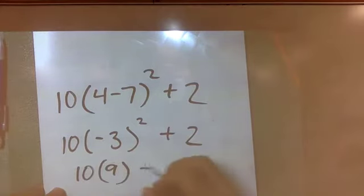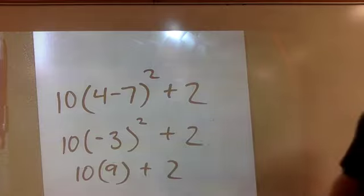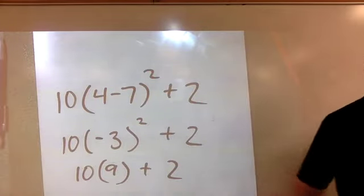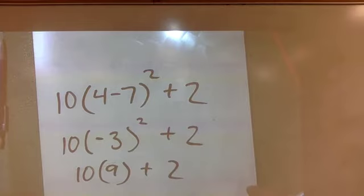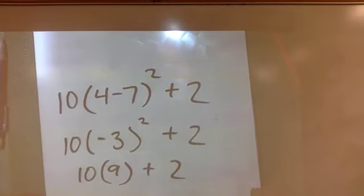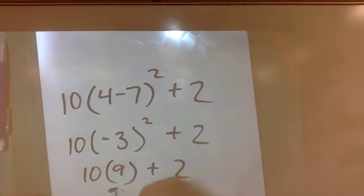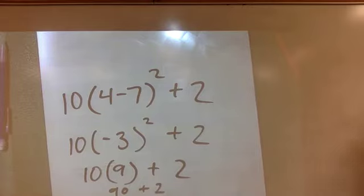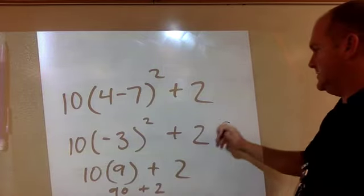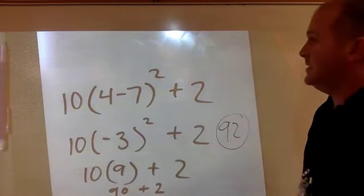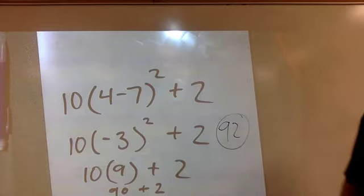So now you have 10 times 9 plus 2. Now you can multiply - all we have left is multiply and add, and multiply does come before add, plus it's also left to right, so it'd be hard to mess this one up. So you get 90 plus 2, and your answer therefore is 92.